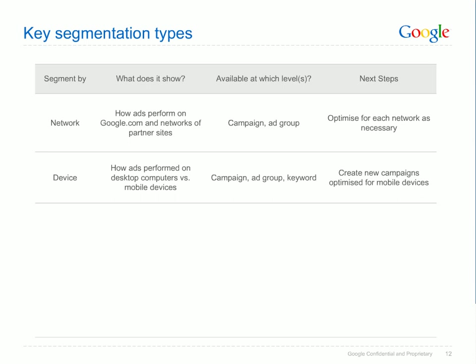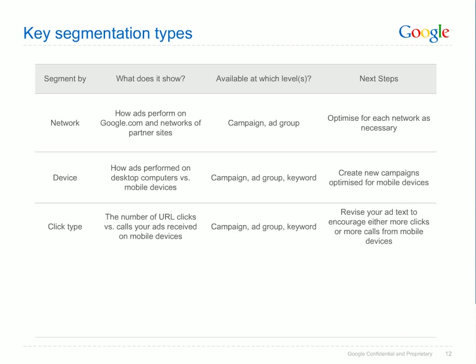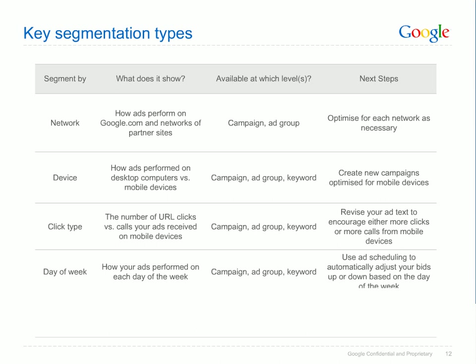The Device segment shows you how your ads performed on computers compared to mobile devices. This segmentation option is available at the campaign, ad group and keyword level. Similar to network segmentation, if you see a substantial difference in performance on mobile devices, you may consider creating a new campaign optimised for mobile. The Click Type segment shows you the number of URL clicks compared to calls your ads received when displayed on mobile devices. If your ads show on mobile, you have the option to use click-to-call phone extensions to add a phone number to your ad text, and the number of calls through your phone extensions are displayed in this segmentation option. Among time-based segmentation options, day of the week is often the most useful — it shows you how your ads performed on each day of the week, letting you understand whether you're getting different types of visitors on weekends versus weekdays. If you see a difference in performance, you can use ad scheduling to automatically adjust your bids or stop showing your ads altogether at different times of the week.